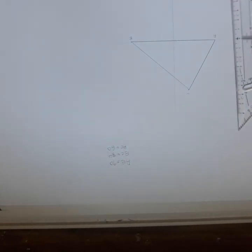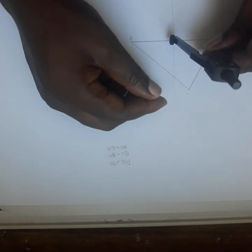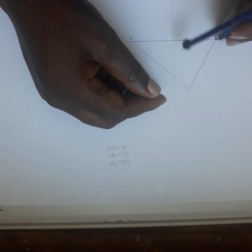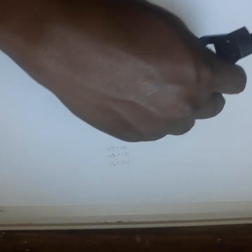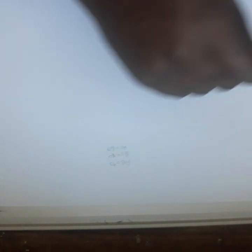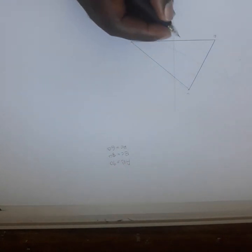Again, I must bisect maybe AC or BC. Let me bisect AC. I'm going to arc this side, and this side. I draw the bisector line. So my bisector lines meet here, which is my center now.